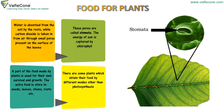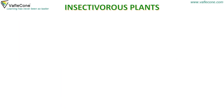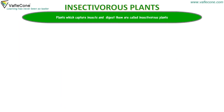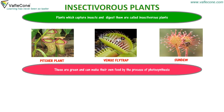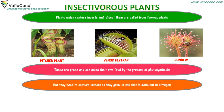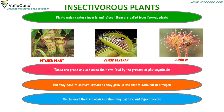There are some plants which obtain their food by different modes other than photosynthesis. Plants which capture insects and digest them are called insectivorous plants — for example, pitcher plant, Venus flytrap, and sundew. These are green and can make their own food by photosynthesis, but they need to capture insects as they grow in soil that is deficient in nitrogen. So, to meet their nitrogen nutrition, they capture and digest insects.